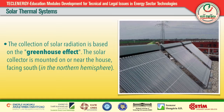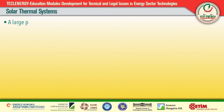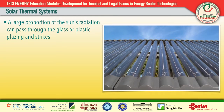Solar technology advanced to roughly its present design in 1908, when William J. Bailey of the Carnegie Steel Company invented a collector with an insulated box and copper coils. By the year 1941, nearly 60,000 units were sold, but the rationing of copper during World War II sent the solar water heating market into a sharp decline. Little interest was then shown in such devices until the worldwide oil crisis of 1973.